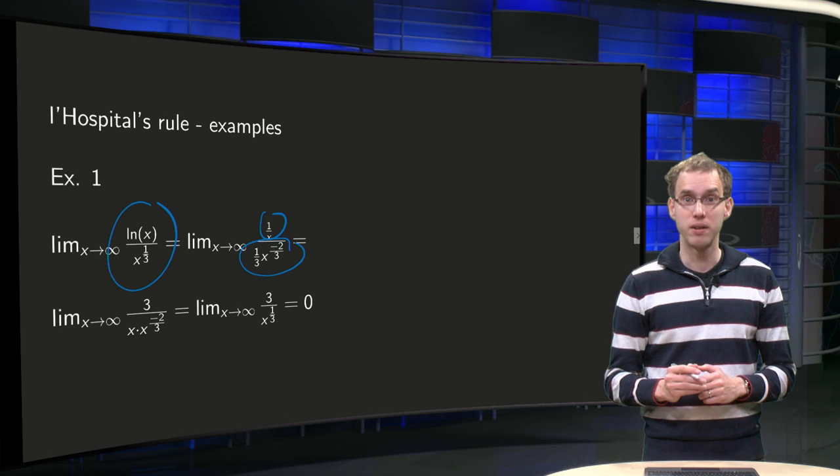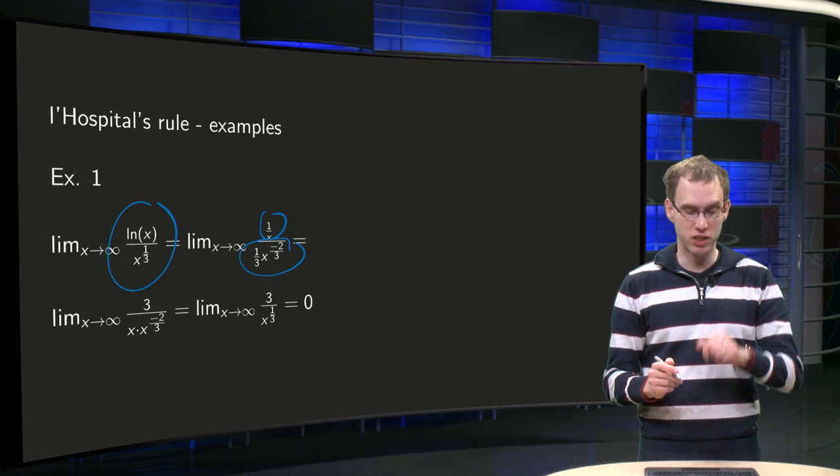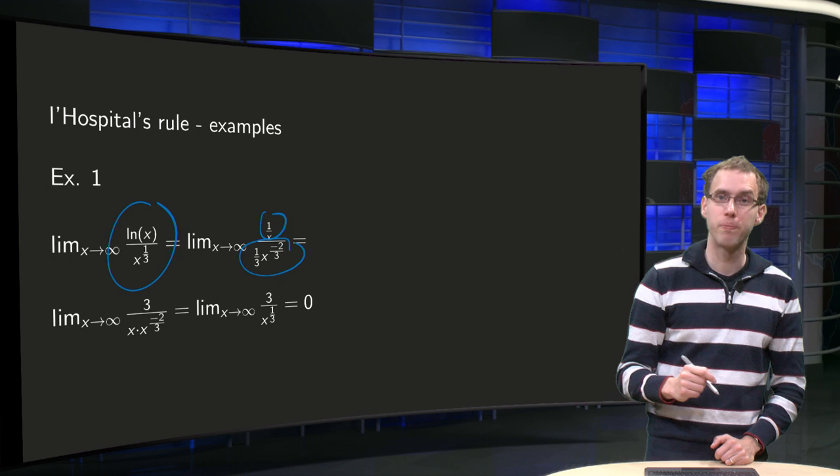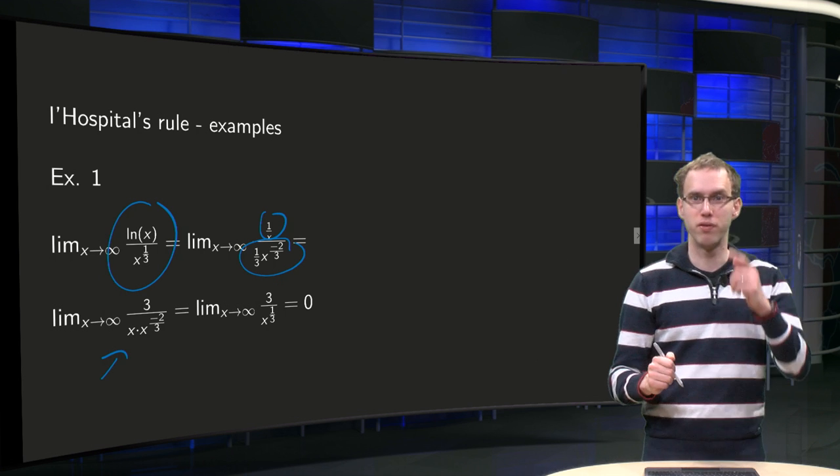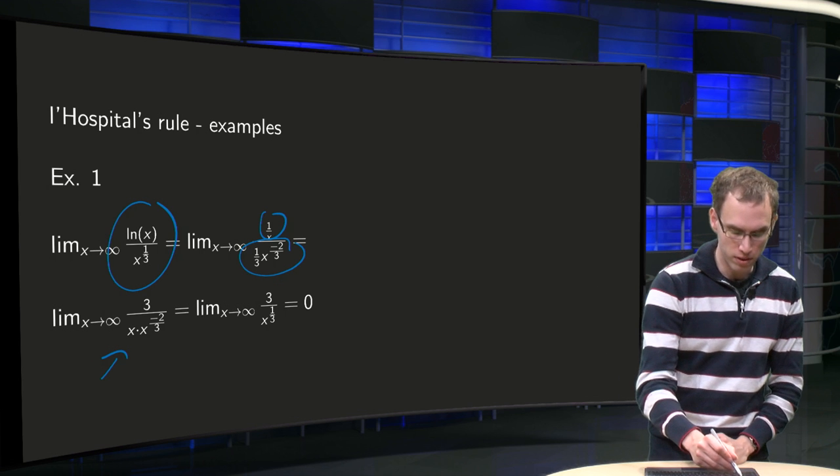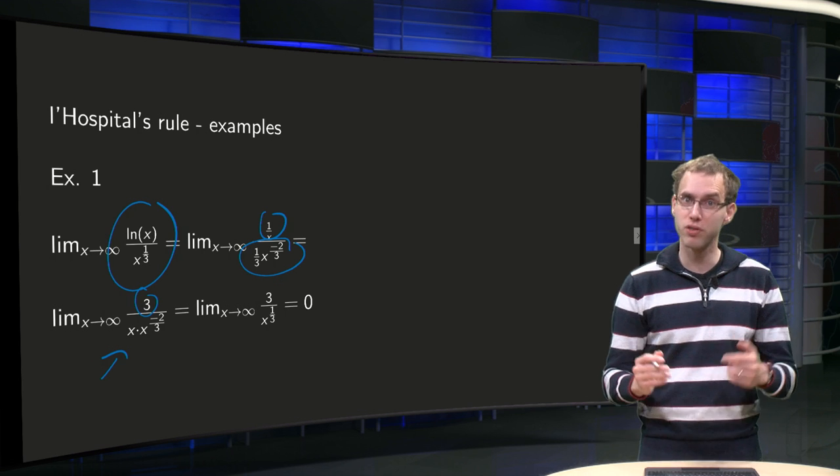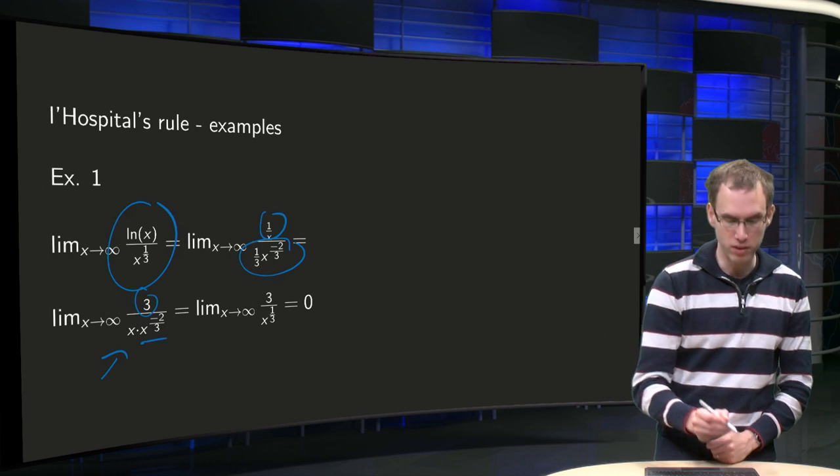And then we have to simplify. First with 1 over x, it goes to the denominator over here. Factor of 3, we have 1 over 1/3, so 1 over 1/3 equals 3, and leave the x to the power minus 2/3 where it was.